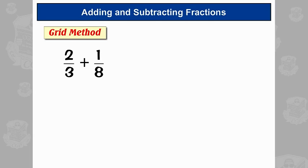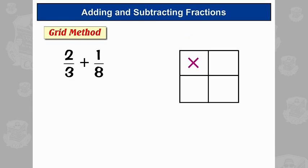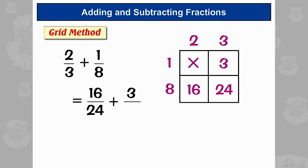So here's the grid method then. You're asked to add together two fractions, and the numbers on the bottom are different. So you draw a grid, two by two, and then you put a time sign in the top left. Then you put the numbers of the fractions here and here. So the first fraction, 2 and 3, you put those across there. And then 1 and 8 you put here and here. Now you fill in the grid by multiplying. So 1 times 3 is 3, 8 times 2 is 16, and then 8 times 3 is 24. Now you use the numbers from the grid to write out the sum again. So instead of saying 2 thirds, you now say 16 24ths, that's the bottom left over the bottom right. And then you put your plus sign, and then it's this number over this number. So 16 24ths plus 3 24ths is 19 24ths. And that's how you do it.